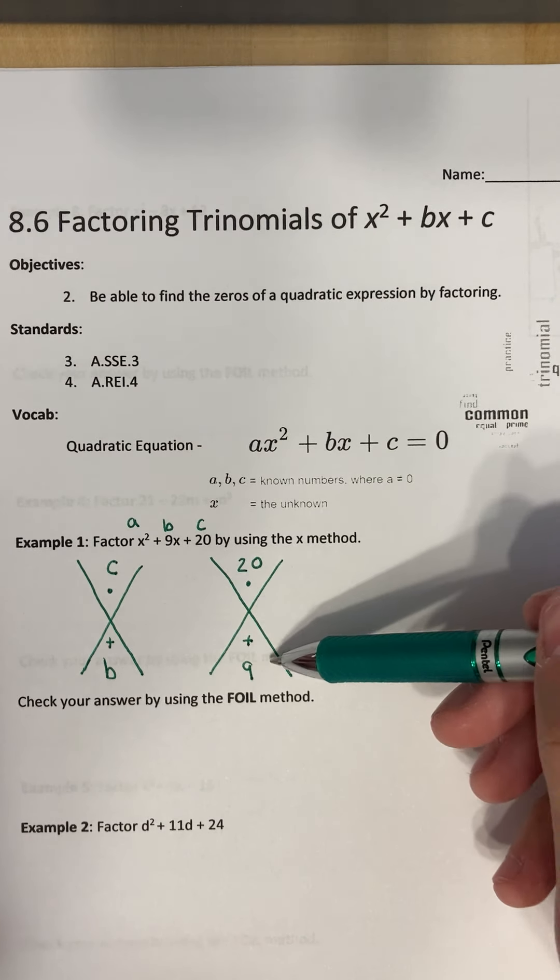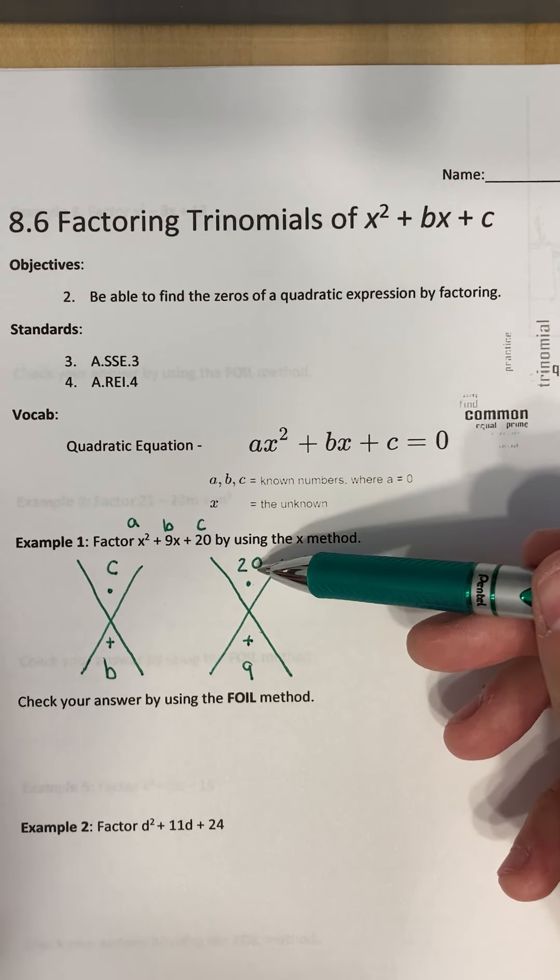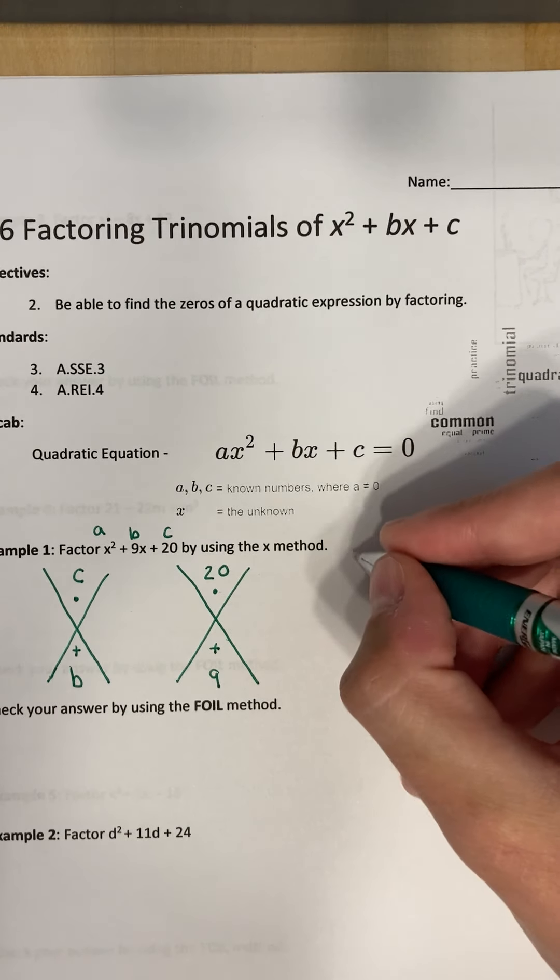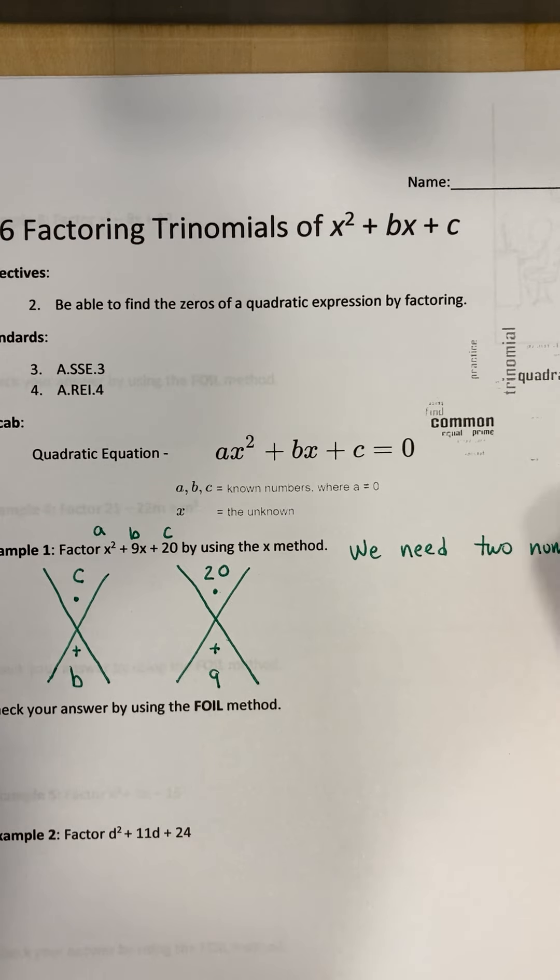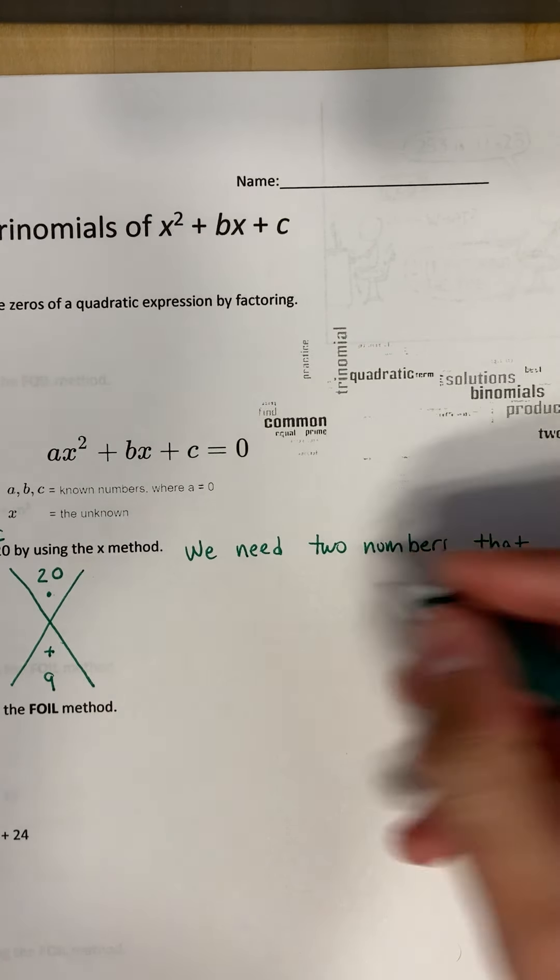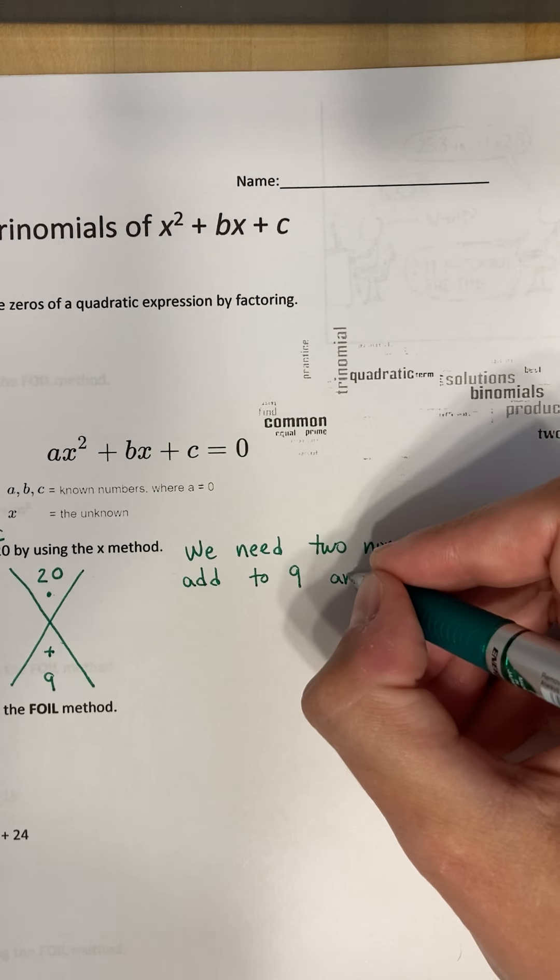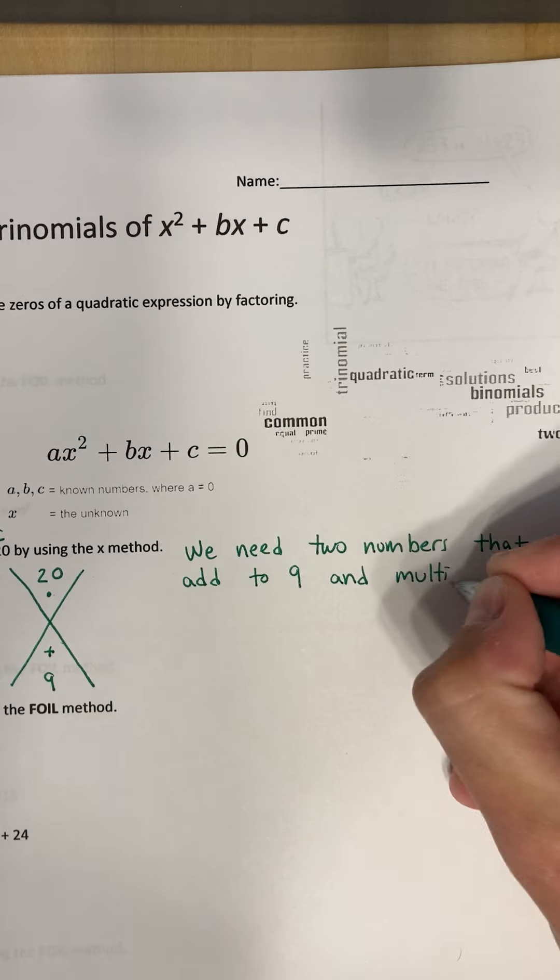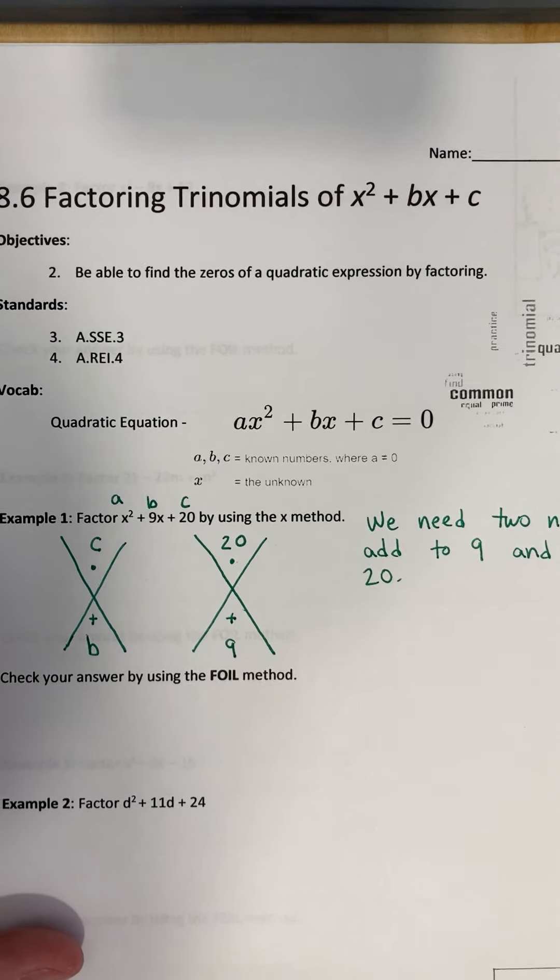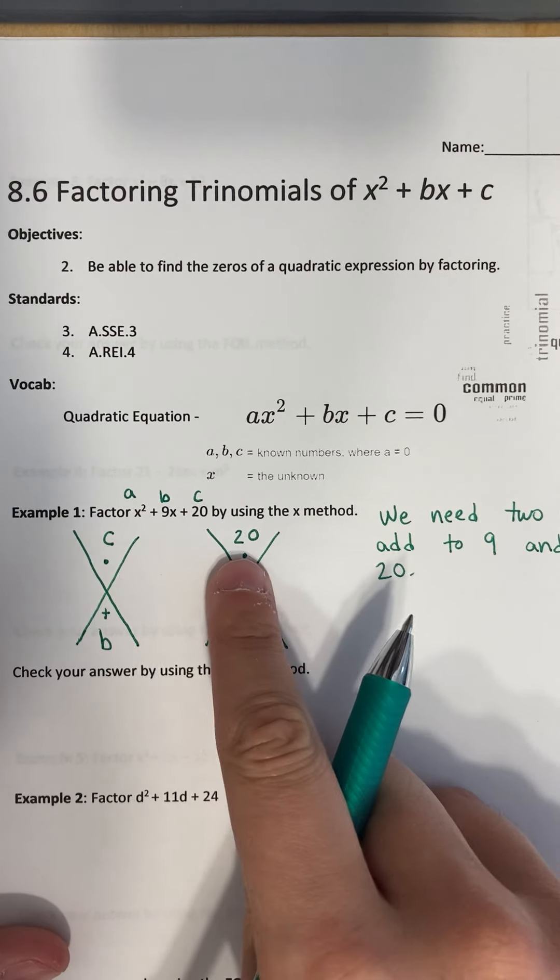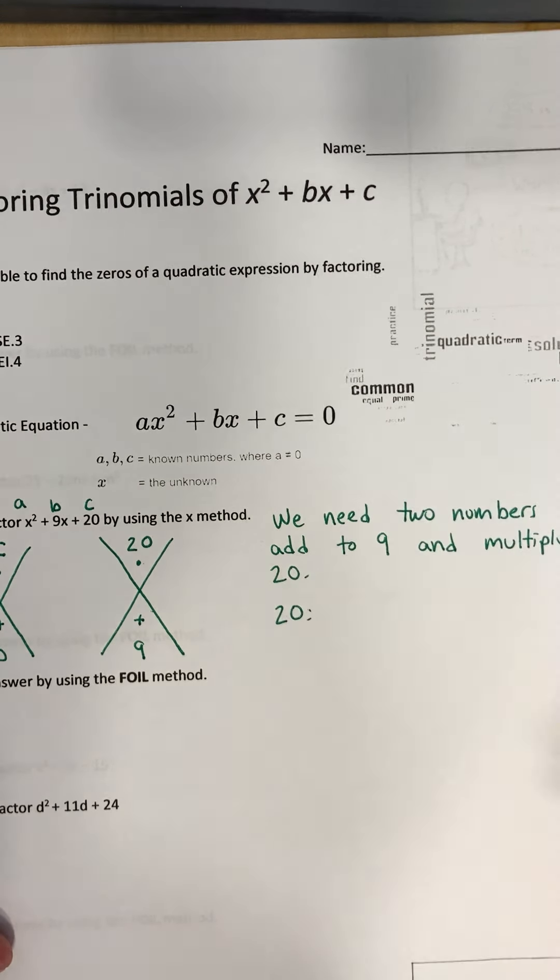So we want to find two numbers that add up to get 9. But those same two numbers need to multiply together to get 20. So we need two numbers that add to 9 and multiply to 20. So let's try and think of two numbers that when you add them, you get 9, multiply to get 20. So you could start off by listing all the factors of 20. Let's try that. So let's do 20. What are the factors of 20?